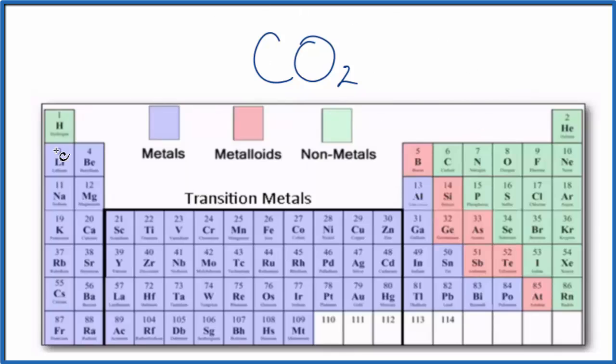So as we look at the periodic table here, sorted by metals, metalloids, and nonmetals, we find carbon, and then we find oxygen. And carbon and oxygen, they're both nonmetals.